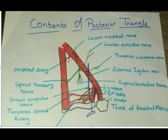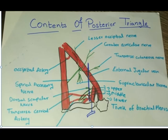The occipital artery, which is a branch of the external carotid artery, can be seen at the apex of the posterior triangle. It passes superficial to the splenius capitis muscle. The transverse cervical artery, which is a branch of the thyrocervical trunk, can also be seen in the occipital triangle. It crosses the scalenus anterior muscle, the upper trunks of the brachial plexus, and the scalenus medius muscle, and finally divides into superficial and deep branches.